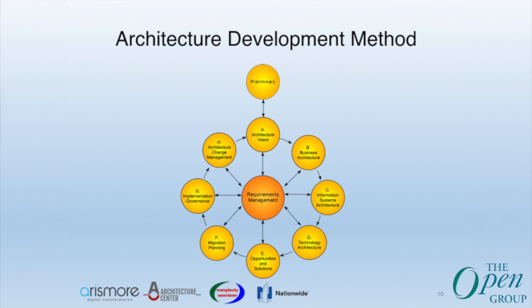The ADM — the beloved crop circle diagram — is where we start up an enterprise architecture practice in the preliminary phase. Once we complete that, we begin ADM cycles as projects, which create a vision, flesh it out into an architecture description, derive a solution architecture, and then build a solution. In the very middle of the diagram you have requirements management, which drives the whole process.